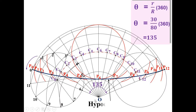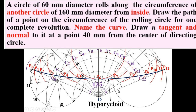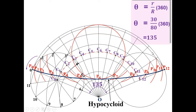The hypocycloid is now complete. Now we are going to draw the normal and tangent. The description says to draw the normal at a point on the hypocycloid which is 40 mm from the center of the directing circle. This is the center O of the directing circle. Take the compass, set the radius as 40 mm, and draw the arc on the hypocycloid with O as the center. Give this intersection point the name V.